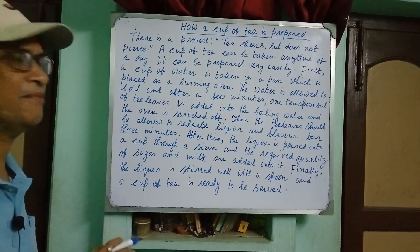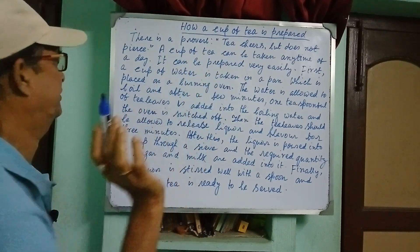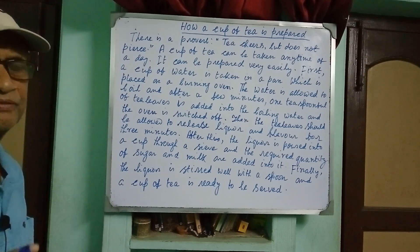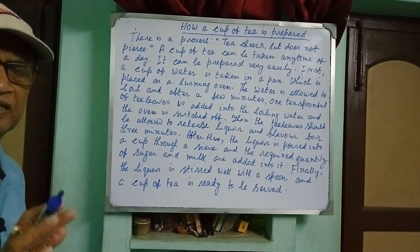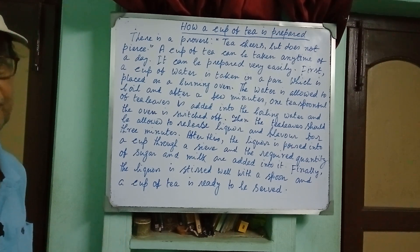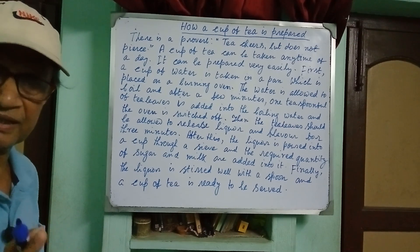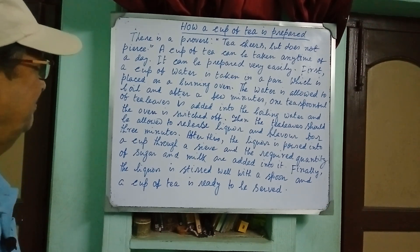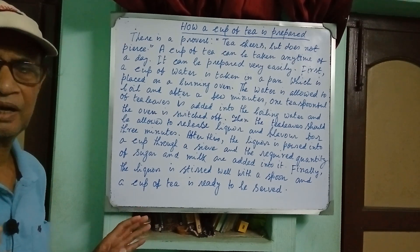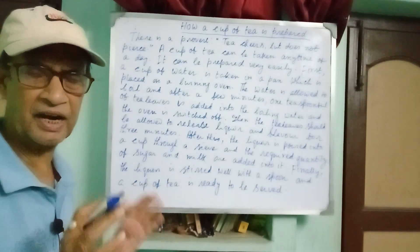Tonight, I am teaching you how a cup of tea is prepared. You must use present indefinite tense and passive voice. These are the two most important methods you will have to adopt — present indefinite tense and passive voice. You must also keep in your memory that you will have to use some linkers so that the sentences are connected very well.